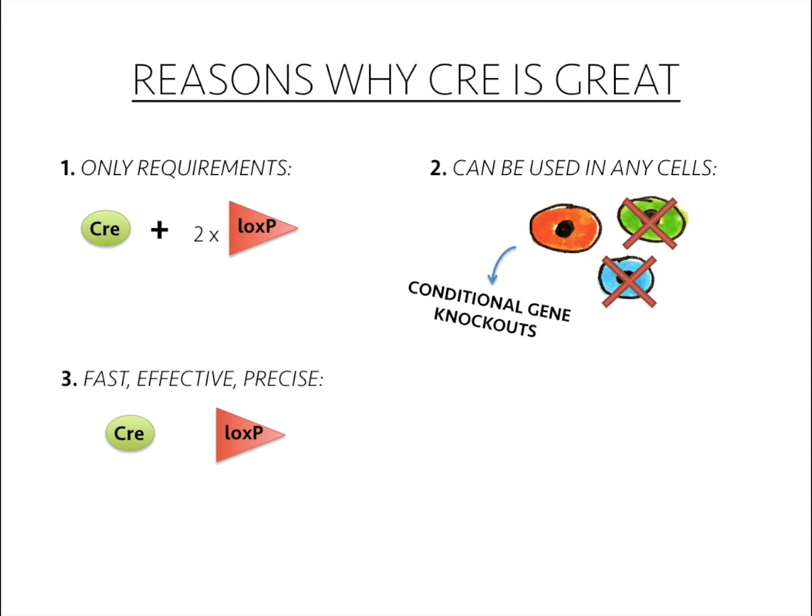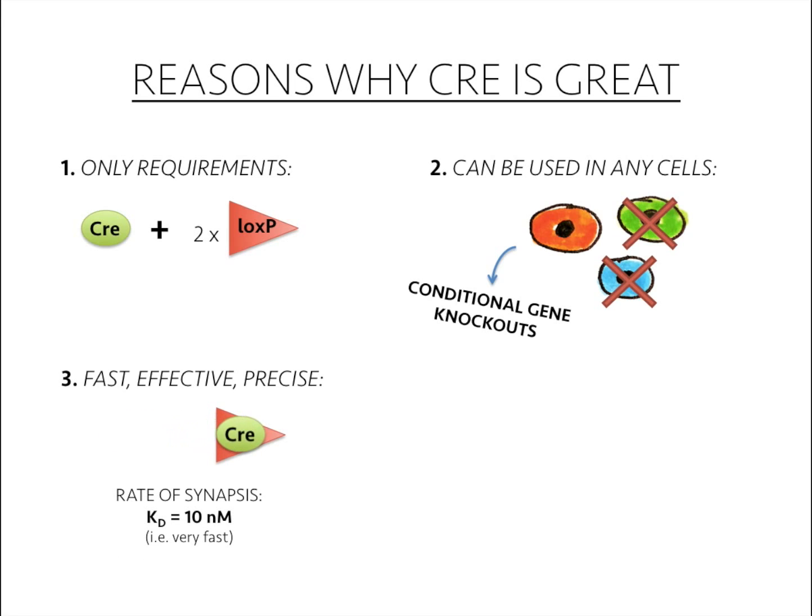The third reason is that Cre recombinase works quickly, effectively, and with high precision. Its rate of synapse is Kd equals 10 nanomolars, considered to be a rate of high affinity, and it will only form synapses with LoxP sites with a very low possibility of causing recombination elsewhere.